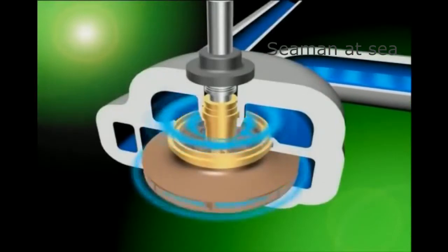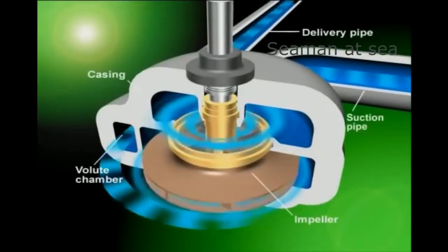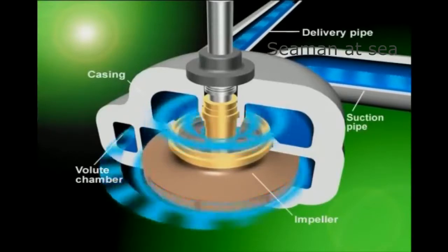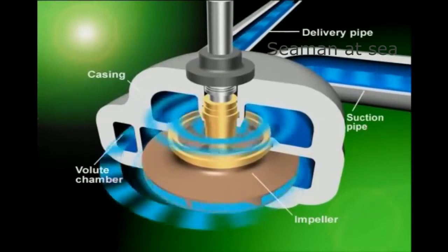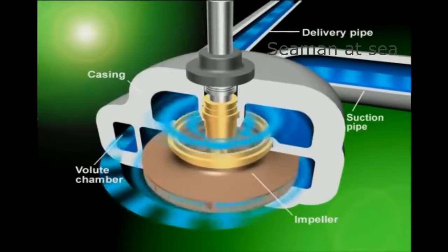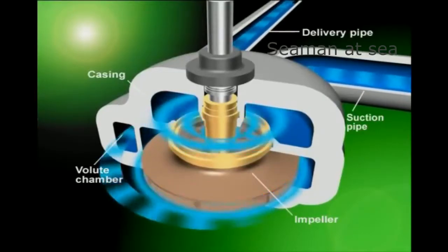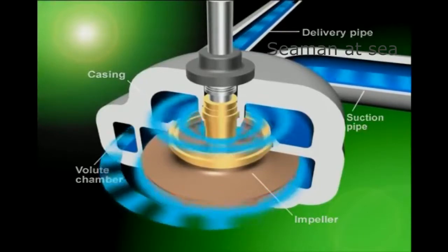With actual pumps, when the impeller is rotated at high speed in a casing filled with water, pressure at the impeller center area drops. Then, pushed by atmospheric pressure, water is allowed to flow into the pump through a suction pipe. The water, splashed by the impeller's centrifugal force, gathers in the volute casing and gains in pressure before flowing out of the delivery pipe.